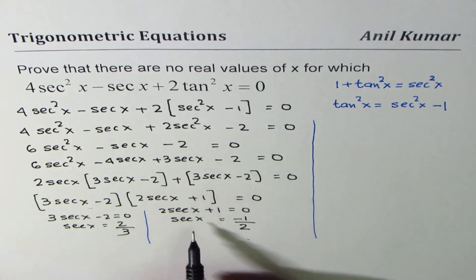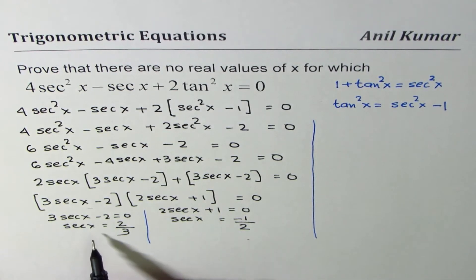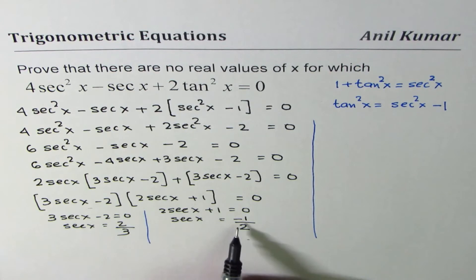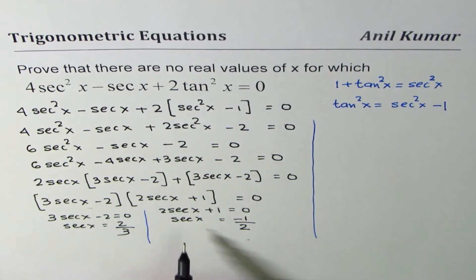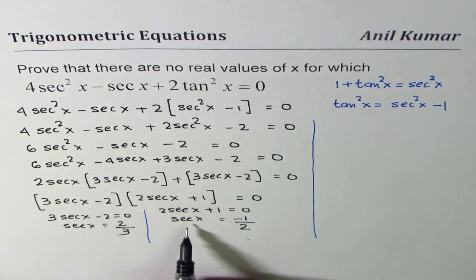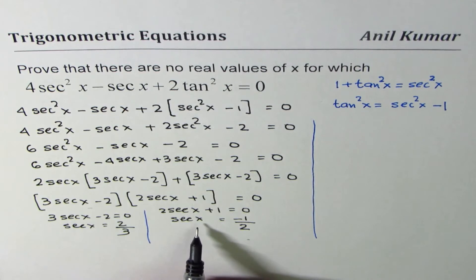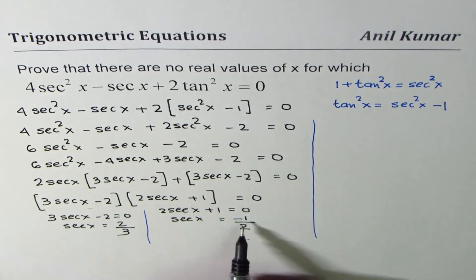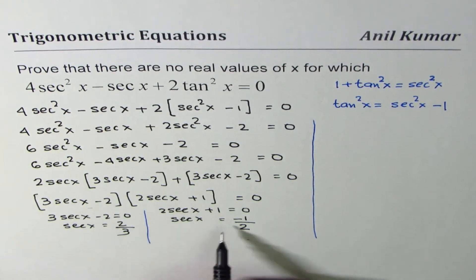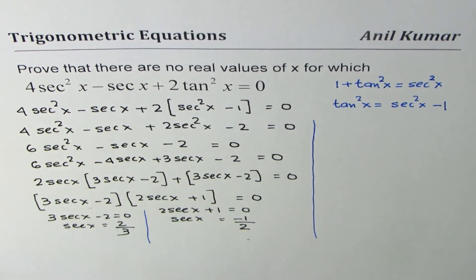Can sec x be 2/3 or minus 1/2? The range of sec x is |sec x| ≥ 1 — it cannot be less than 1 in absolute value. Therefore there is no solution.